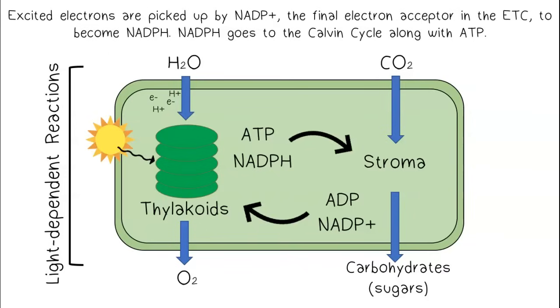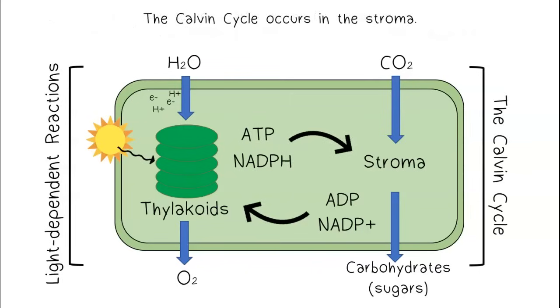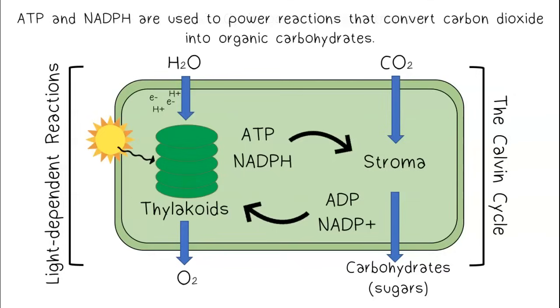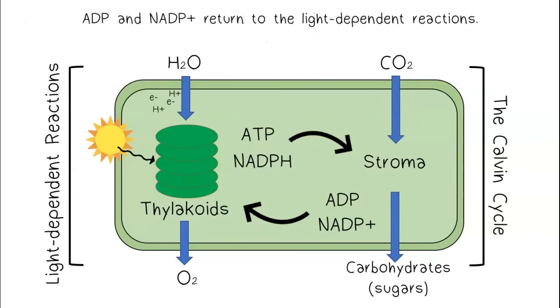NADPH goes to the Calvin cycle along with ATP. The Calvin cycle occurs in the stroma. ATP and NADPH are used to power reactions that convert carbon dioxide into organic carbohydrates. ADP and NADP+ return to the light-dependent reactions.